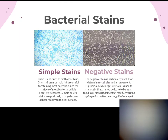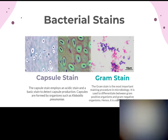In your kit you have some stains. I wanted to bring up four different types: basic stains like methylene blue, gram stain, safranin, india ink, congo red, and others. Many simple stains are vital stains — positively charged stains that adhere to the bacterial cell surface, which has a negative charge. A negative stain is particularly useful for determining cell size and arrangement. Nigrosin, which is in the kit, is an acidic negative stain used to stain cells that are too delicate to heat-fix.